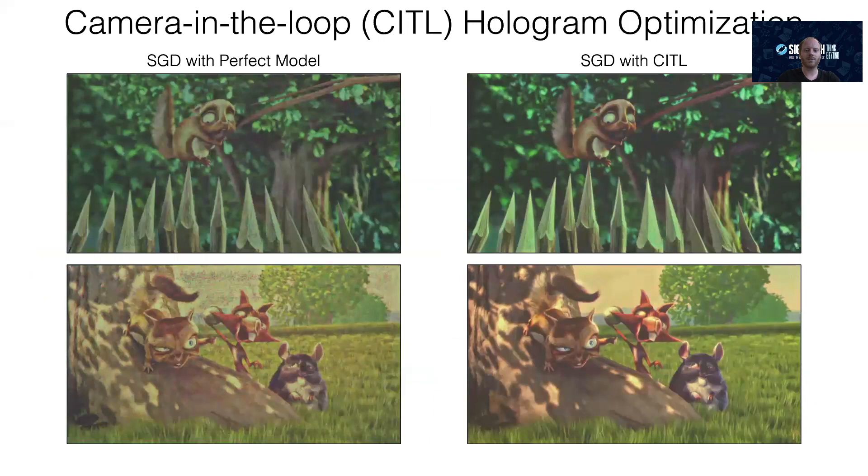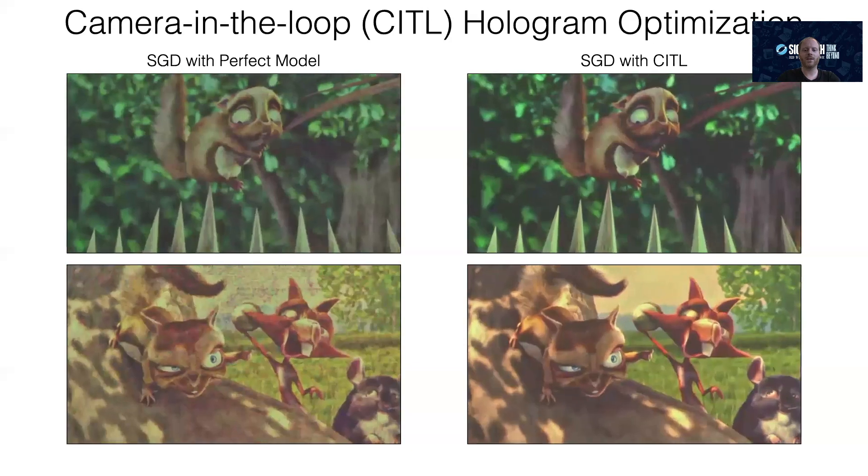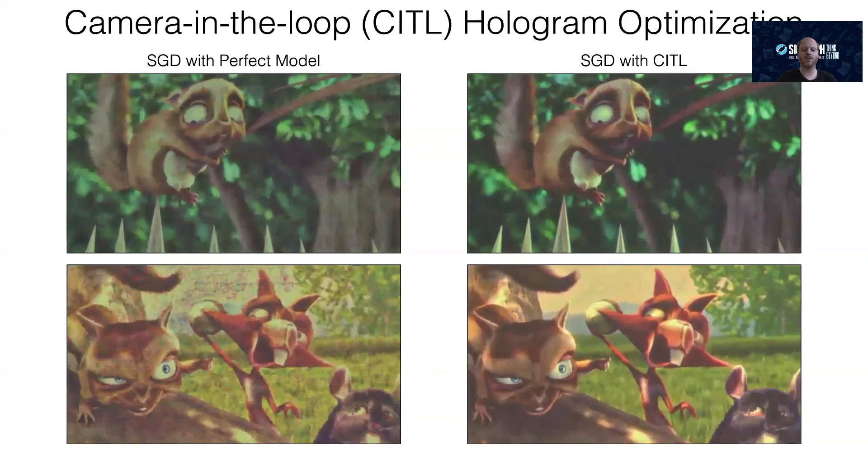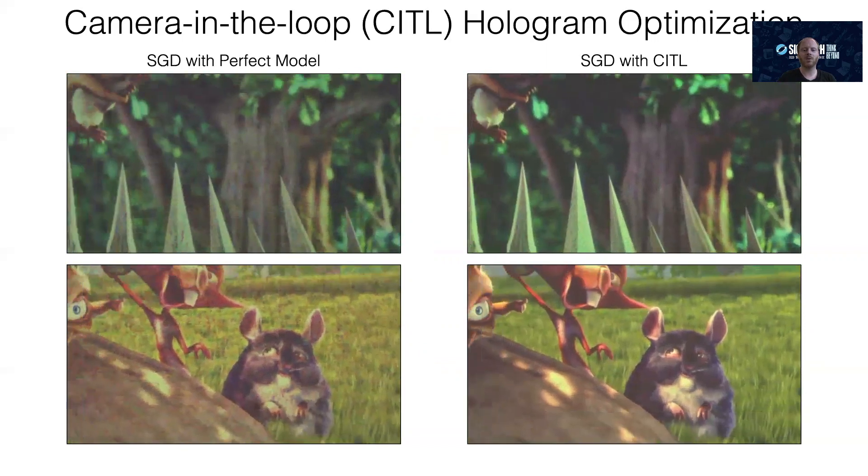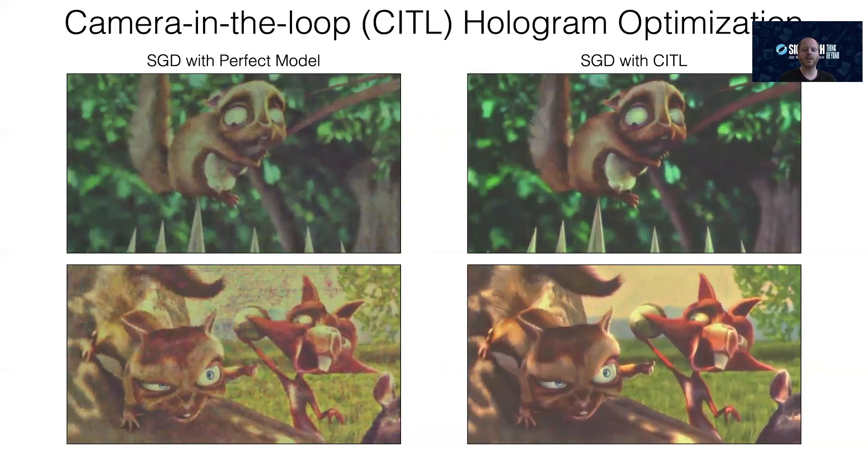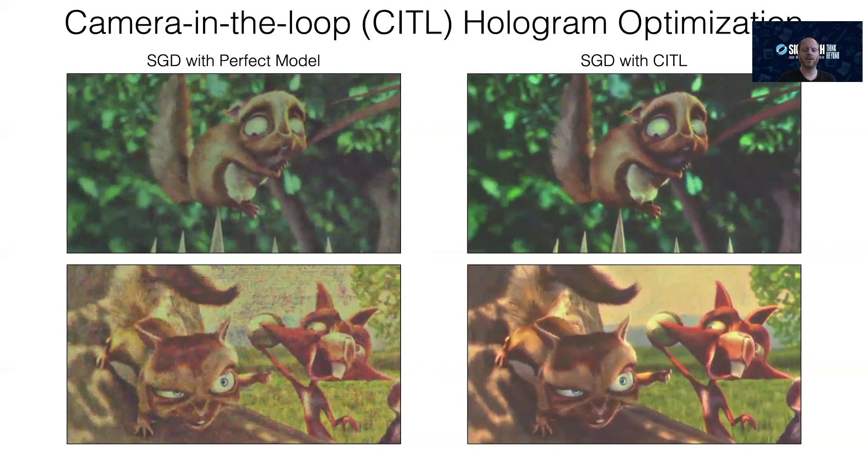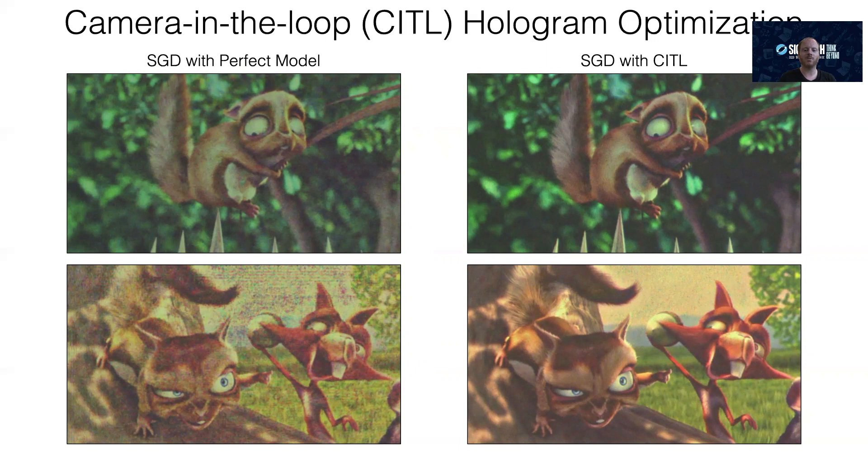Let me show you some results. Looking at a direct comparison of SGD with the idealized propagation model and the camera-in-the-loop model, we see that we can achieve significantly better image quality with our simple idea. The colors and contrast are a lot better, noise is significantly reduced, for example, on the background, and the image just looks a lot better. I'll make a bold claim here and say that this is the state of the art of computer-generated holography today. The challenge is that you need a camera in the loop for each target image.